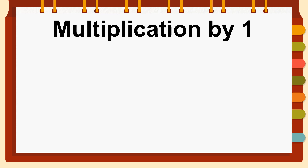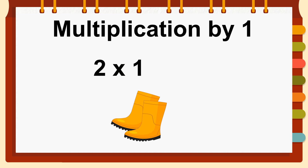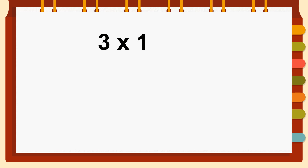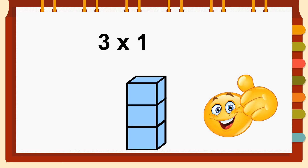Now let's practice multiplication by one. Here on the screen we have two times one. Think about what this means — it means we will have one group of two items. Over here we have a pair of shoes, and in a pair of shoes we have two shoes. A pair of shoes contains two shoes, so in total we have the number two. Two times one equals two. Now what is three times one? Three! Bravo! Three times one equals three.